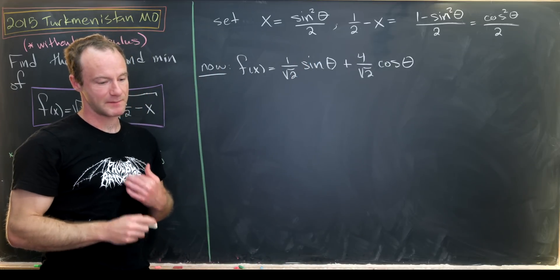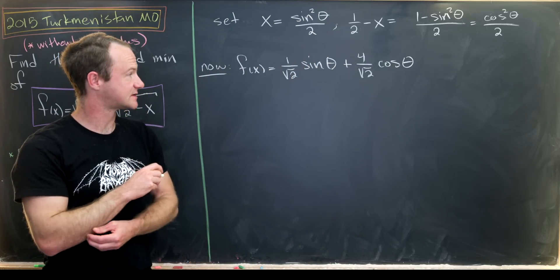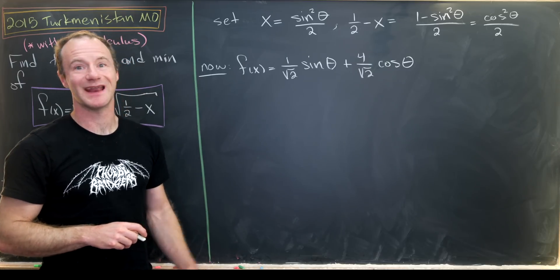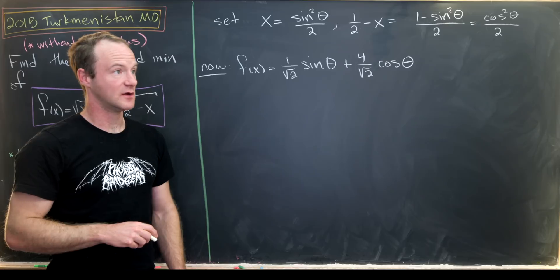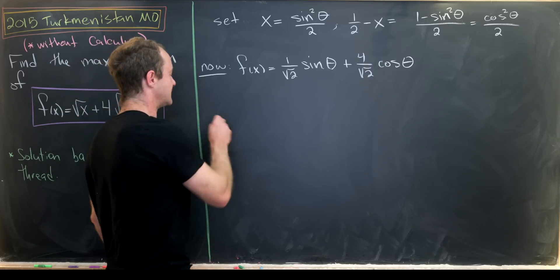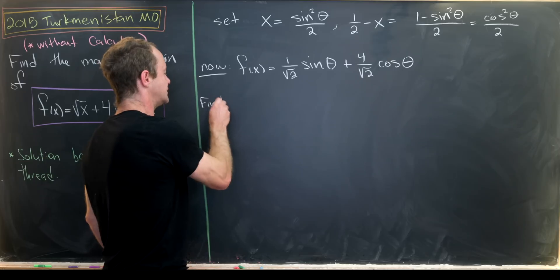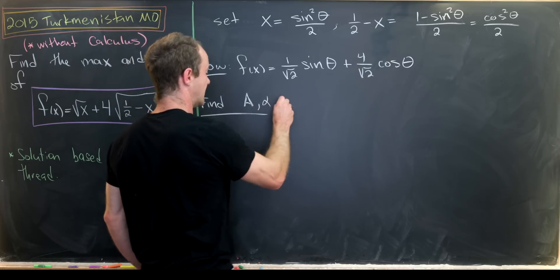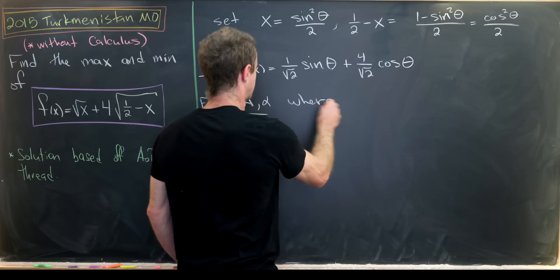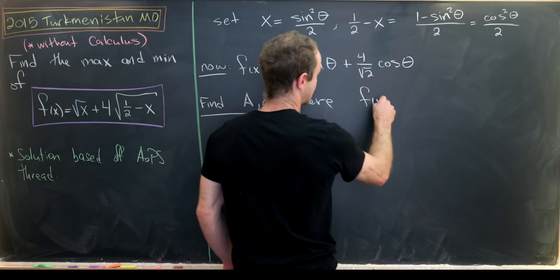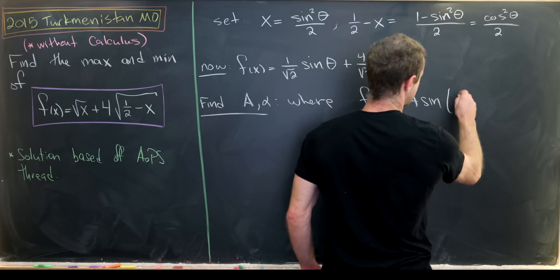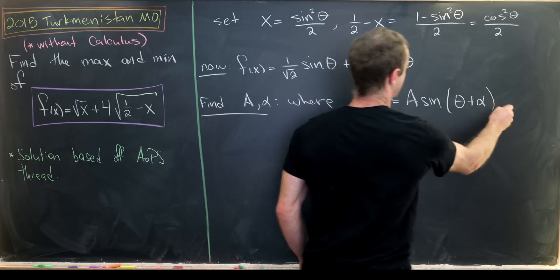So now we want to maximize something like this. And the way that we'll maximize something like this is be inspired by an angle sum formula for the sine function. In particular, what we want to do is find numbers a and alpha where we have f of x is equal to a times the sine of theta plus alpha.